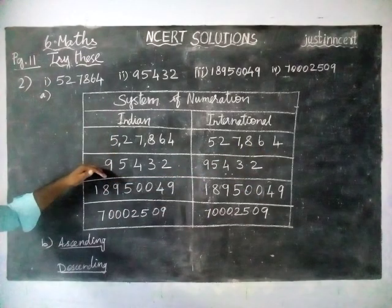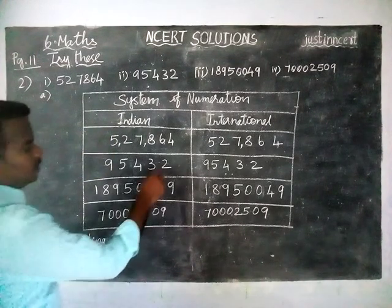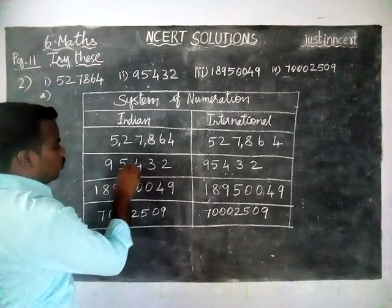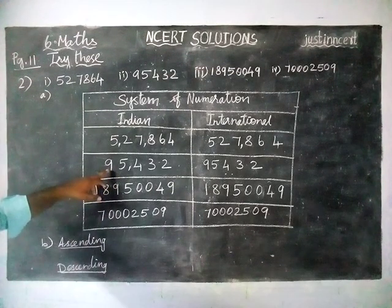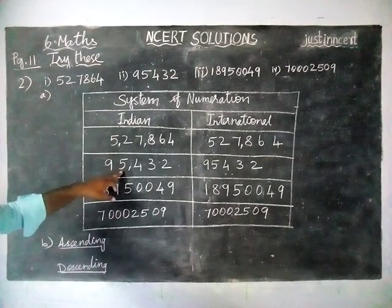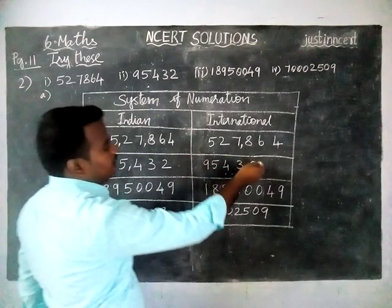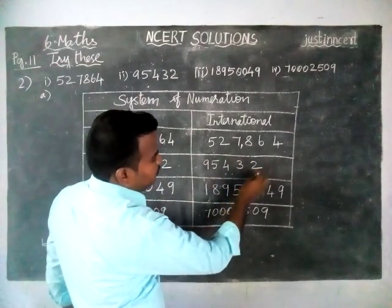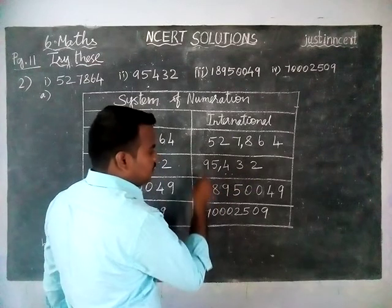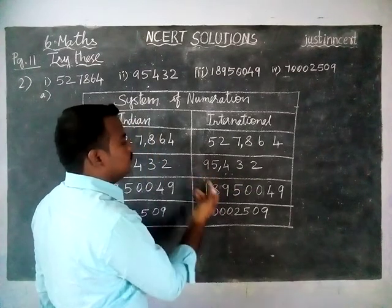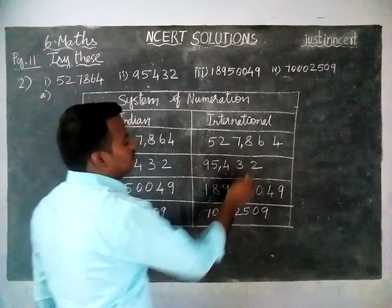Next number in Indian system of numeration: ones, tens, hundreds — then 1000, 10,000 — so this answer is 95,432. In the same case, in international system of numeration: ones, tens, hundreds — comma. Here we don't have a third digit, so no problem. So here also 95,432.